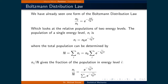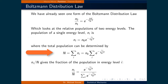This expression comes in other forms. For instance, the population of a single energy level, ni, is equal to n0 times e raised to the power of negative ei divided by the Boltzmann constant times the temperature, where ei is the energy of a specific energy level. We can calculate the total population by taking the sum over ni, which equals n0 times the sum of e raised to the power of negative ei over kbT.